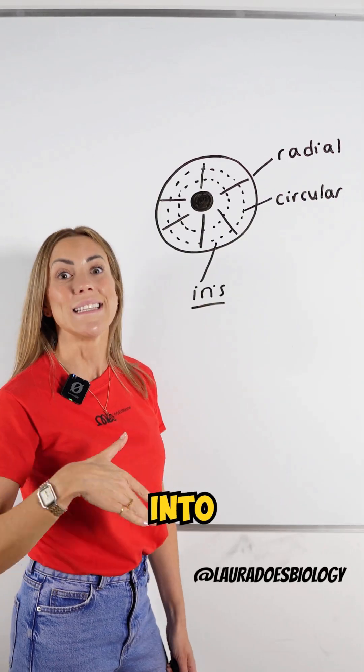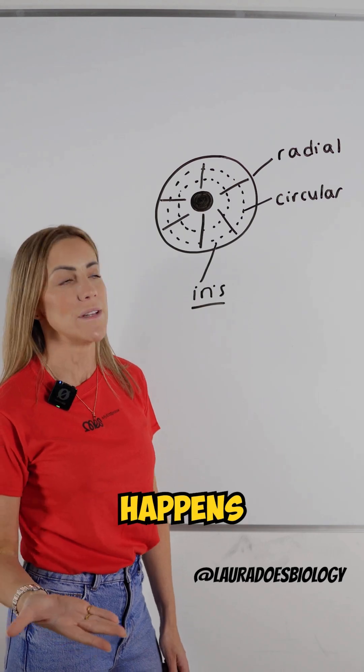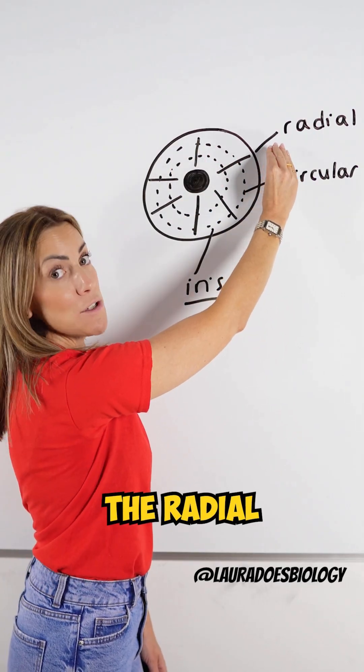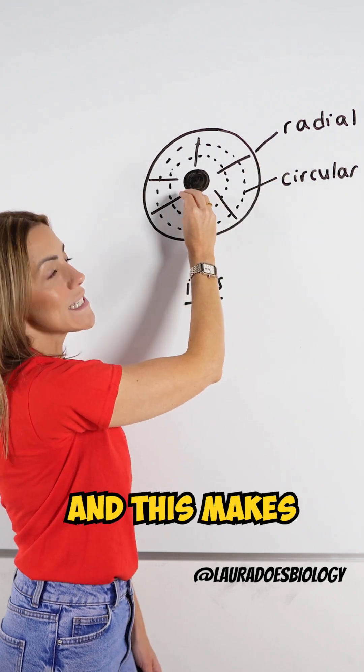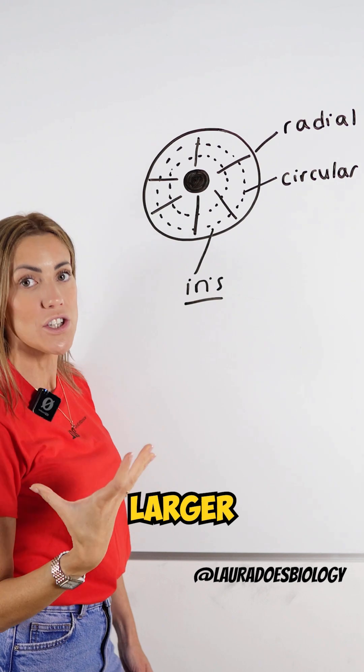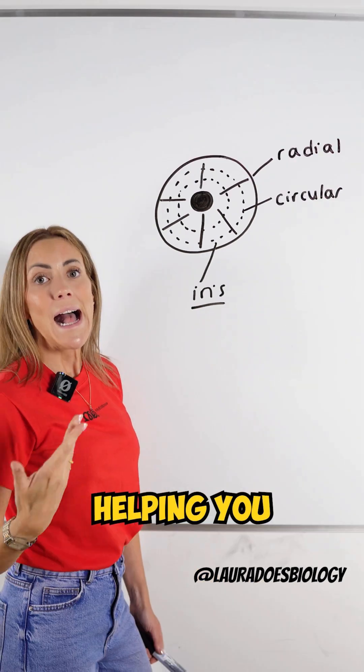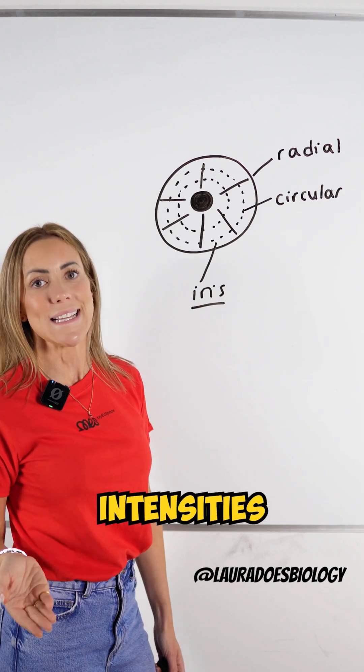When moving from bright light into dim light, the opposite happens. The circular muscles relax, the radial muscles contract, and this makes the size of the pupil larger so that more light enters and hits the retina, helping you to see in lower light intensities.